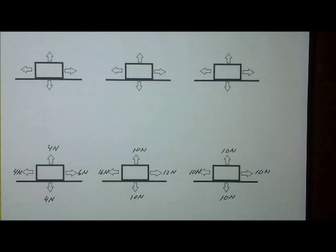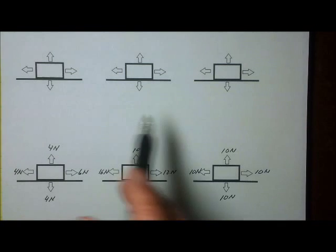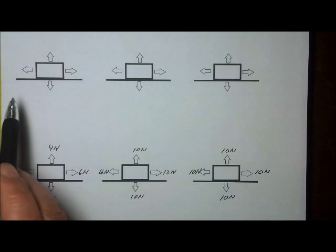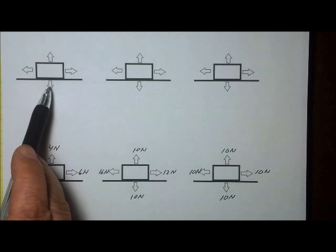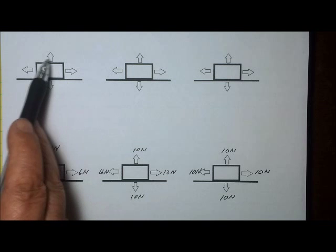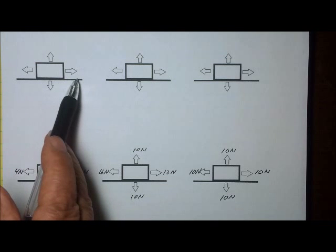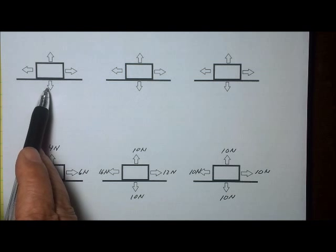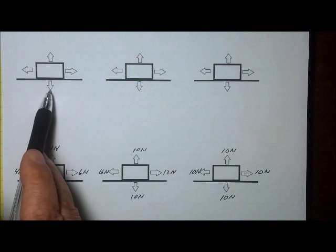Let's take a look first at the diagrams I have here on this paper. The diagrams show a box sitting on the surface of perhaps a table. The arrows represent forces, and you'll notice that each arrow shows a direction.